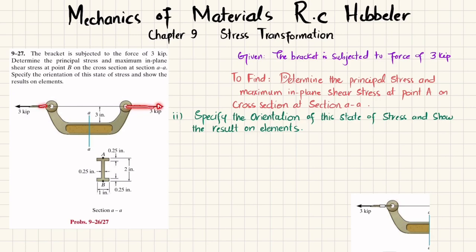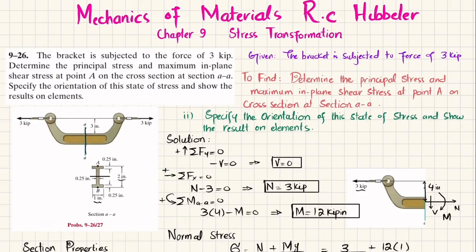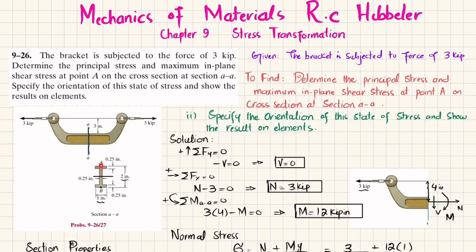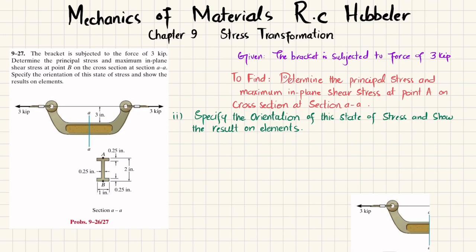You can see this is a bracket and a 3 kips axial or tensile load is applied. At section A-A, the cross section of this is shown as an I-beam. You have to find the principal stresses at point B and maximum in-plane shear stress, specify the state of stress, and show the result on the element. In problem 9-26 we solved for point A; here we will solve it for point B.